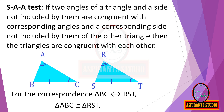Now coming to the SAA test — otherwise called the AAS test. If two angles of a triangle and a side not included by them are congruent with corresponding angles and a corresponding side not included by them of the other triangle, then the triangles are congruent with each other. Many students go wrong with the SAA test because the side is not included between the two angles.